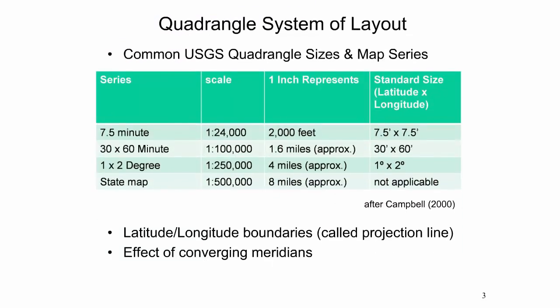Quadrangles are individual map sheets that are laid out as four-sided figures, each of which is bounded by lines of latitude and longitude. The set of boundary edges is called a projection line. Due to meridian convergence, the northern boundary of the quadrangle is somewhat narrower than the southern one, and the shape of a quadrangle is closer to a trapezoid.